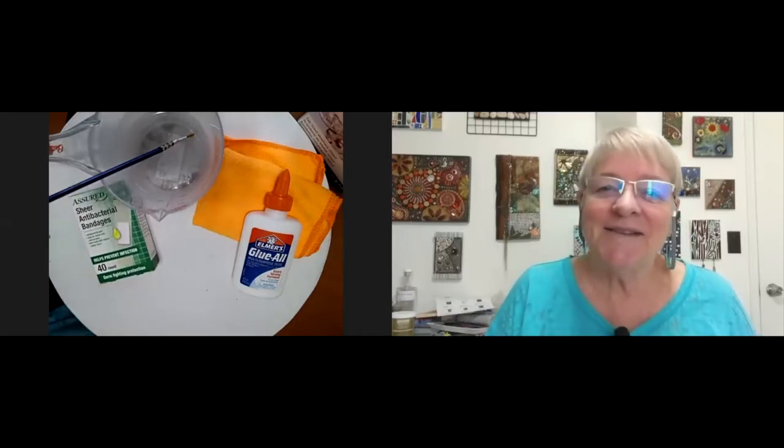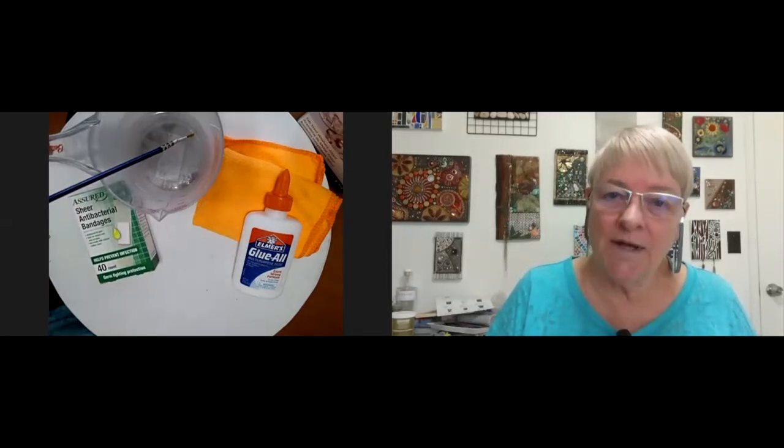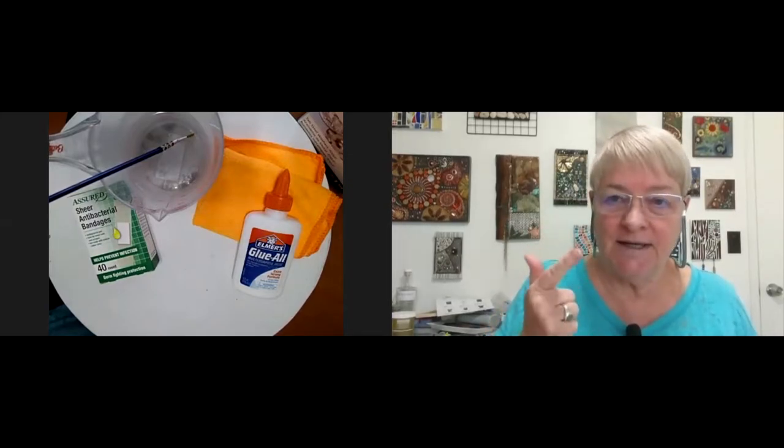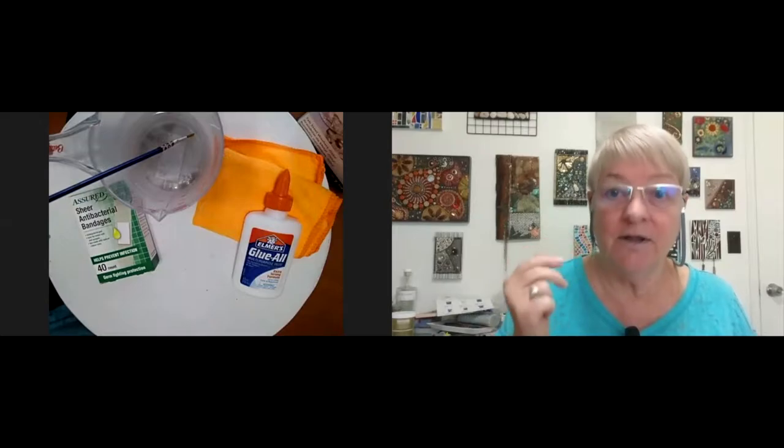All right. So what I wanted to just cover quickly is what is a mosaic? A mosaic consists of three components: a substrate, an adhesive, and tesserae. Three big words.